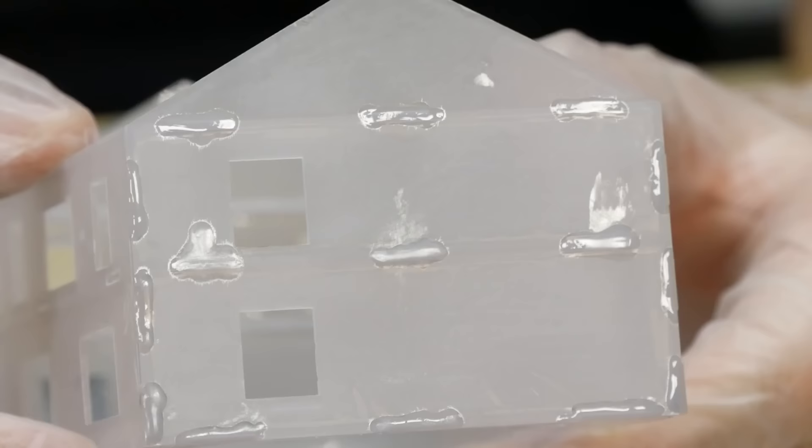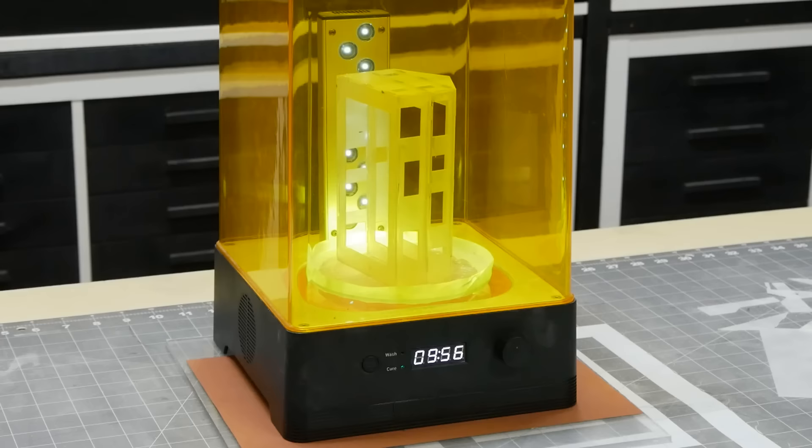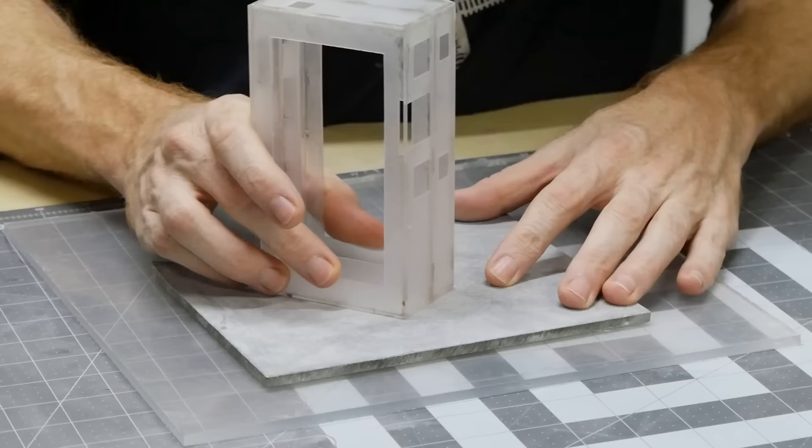Once done I give the model a final cure using the curing chamber for about 10 minutes just to make sure all of the resin is cured properly. You could also leave it out in the sun if you don't have a curing chamber. Once fully cured the excess is sanded away.